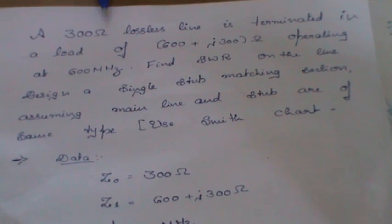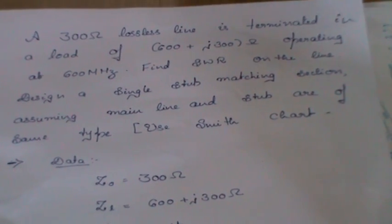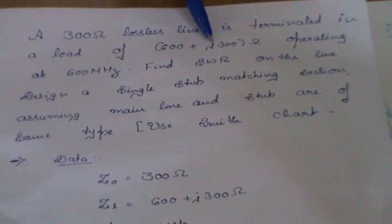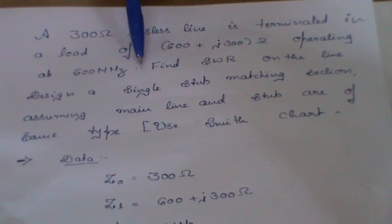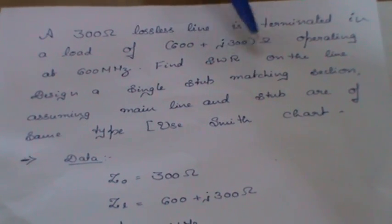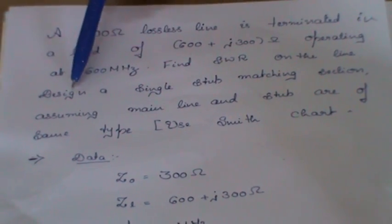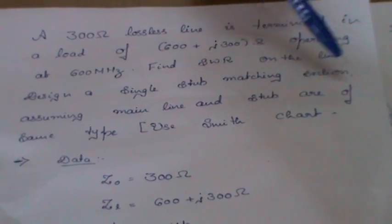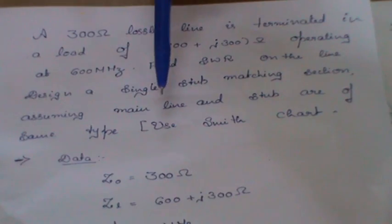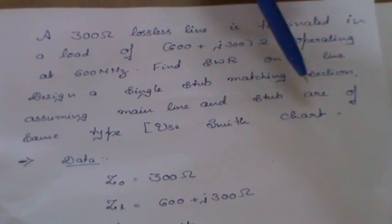A 300 ohm lossless line is terminated in a load of 600 plus j300 ohm operating at 600 megahertz. Find SWR on the line and design a single step matching section assuming main line and step are of same type. They have asked you to use Smith chart.